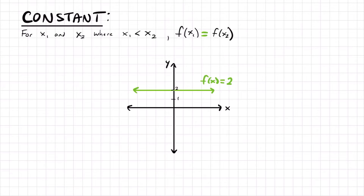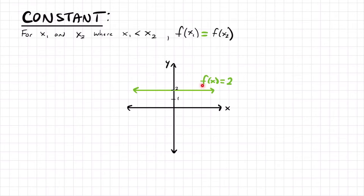There's one more type of function we can describe — a constant function. If we pick two values of x where x1 is less than x2, their y values would be the same. That's true for functions like f of x equals 2, where for any value of x, the y value is always 2 from negative infinity to infinity. The slope of a horizontal line is 0, so for a constant function the first derivative is equal to 0.